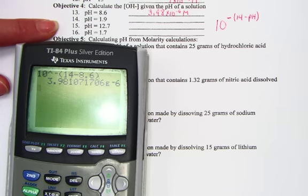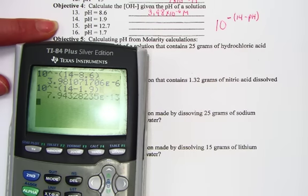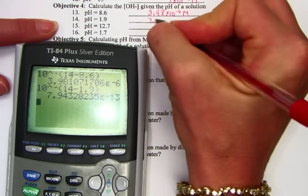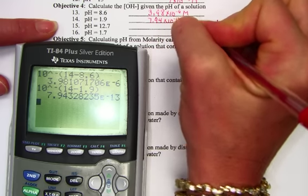Same strategy for number 14. 10 raised to the negative, then the parenthesis for 1.9. Whoops, 14 minus 1.9. And that changes pH into pOH, and we get a value of 7.94 times 10 to the negative 13th molar units.